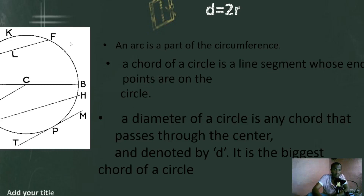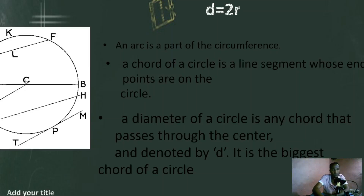An arc is a part of the circumference. Let's say the arc of the circle. We call this circle C, because we symbolize the circle based on the center point — here the center point is C. We call this circle 'circle C.' You can't say circle A or circle E. What we assign is C.